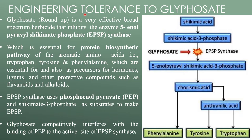Genetic engineering for tolerance to glyphosate. Glyphosate, also known as Roundup herbicide, is a very effective broad-spectrum herbicide that inhibits the enzyme 5-enolpyruvylshikimate-3-phosphate synthase, also called EPSPS, which is essential for the protein biosynthetic pathway of aromatic amino acids such as tryptophan, tyrosine, and phenylalanine.